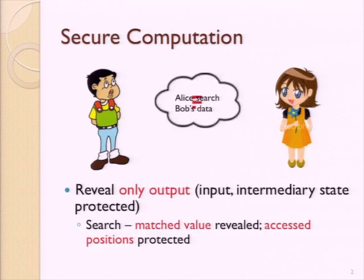For the rest of the talk, our running example will be the function that allows Alice to search Bob's database. Bob has some database and Alice wants to find something in it, so the function they want to compute is just finding this value. We want to reveal the matched value at the end, but hide what positions in the database were accessed during the search protocol — maybe the search involved looking at several different positions until reaching what you're looking for.